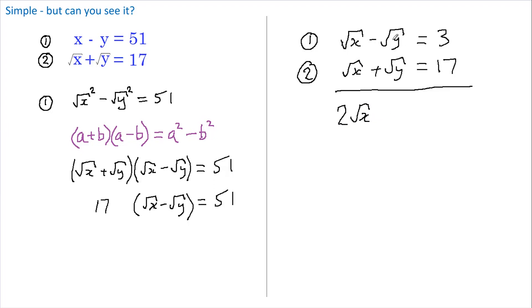x, the y's disappear, and this becomes 20. That means that root x is 10, and squaring we get that x equals 100. Then if we substitute this into equation number one up here, we get 100 minus y